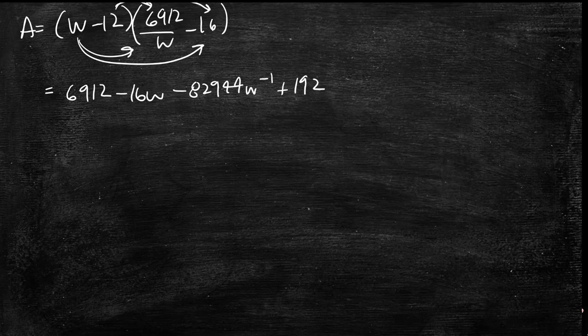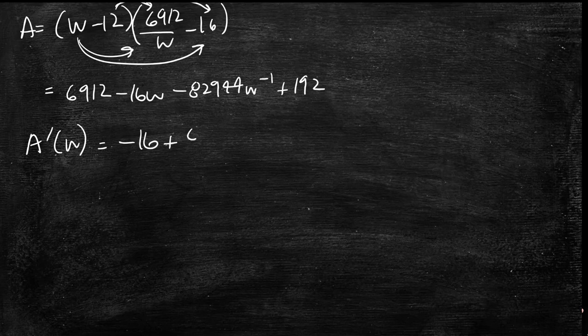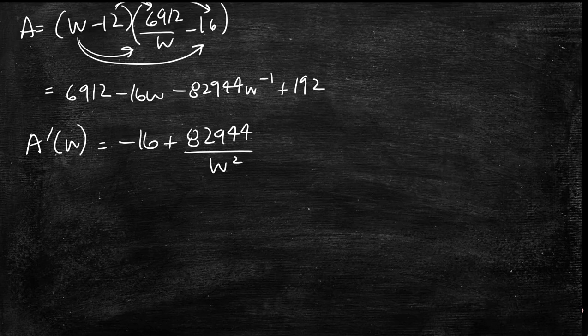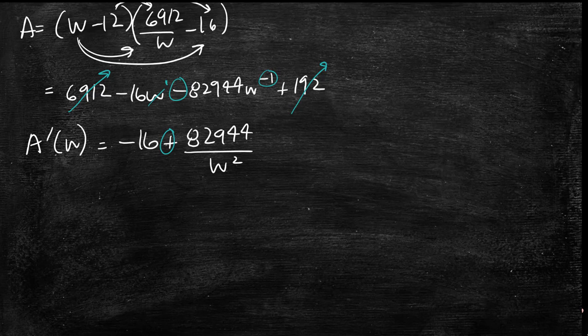So now if you take the derivative of this because we're trying to find the maximum, you're going to be left with minus 16 plus 82944 over W squared. So again, this goes to 0. This goes to 0. And this, since this was a 1, this goes away. It's just a 16 that's left. And you multiply negative 1 with a negative. It becomes a positive. And you have to subtract another one. So that becomes a 2.